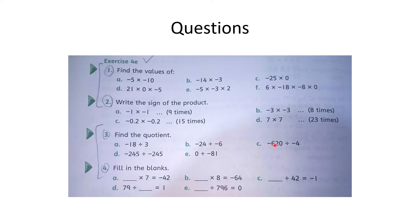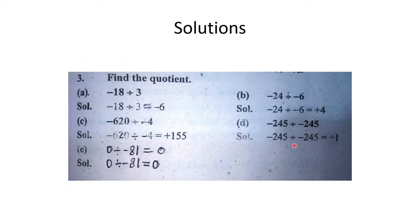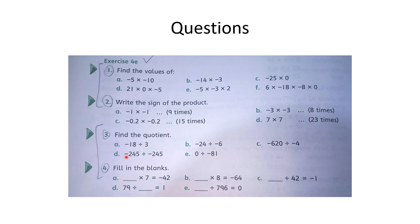C part mein minus 620 ko minus 4 par divide karna hai. Minus minus plus ho jaata hai. 620 divided by 4 = 155 times. To answer plus 155 aayega. Uske baad D part.